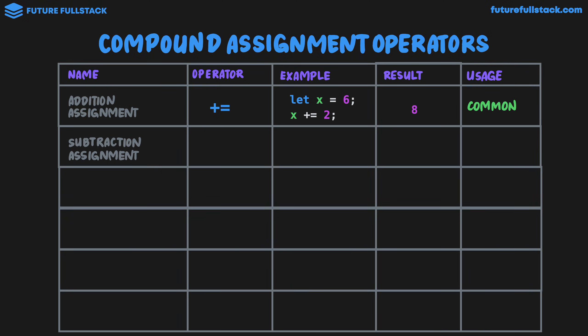Subtraction assignment is minus equals. Looking at example, let x equals 5. If we then did x minus equals 3, the value of x would be 2. And again, this is commonly used.